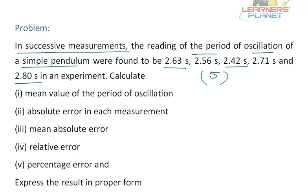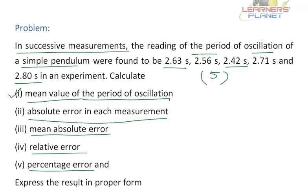Based on these five observations, we have to find out or calculate mean value of period of oscillation, absolute error in each measurement, mean absolute error, relative error and percentage error. And finally, we have to express the result of these observations in proper scientific form. Let's begin with the first portion to find out the mean value of period of oscillation.